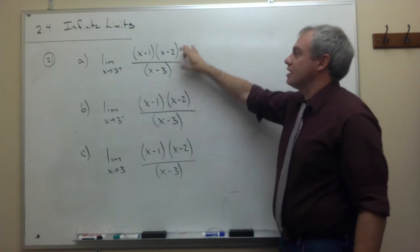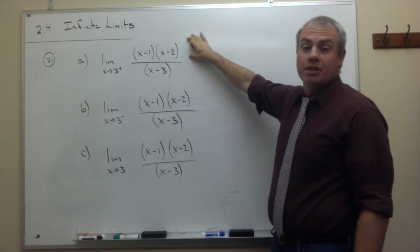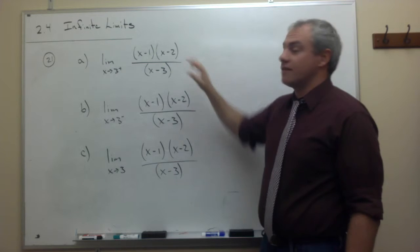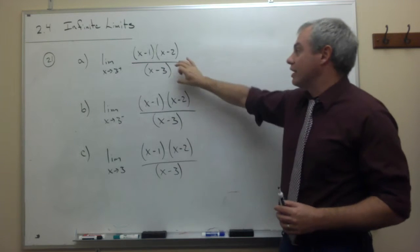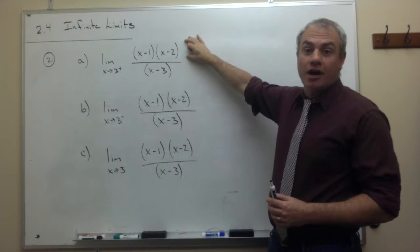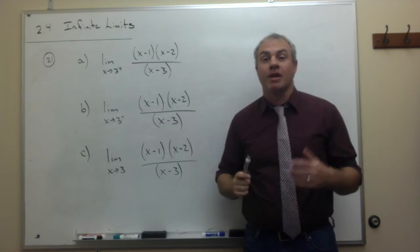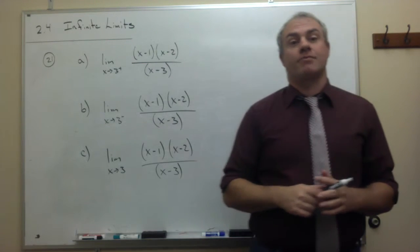And we can pretty quickly see here, since the top is already completely factored, that this is, in fact, a vertical asymptote. There is no x minus 3 on the top to cancel out this x minus 3 on the bottom, so we know we're dealing with a vertical asymptote.